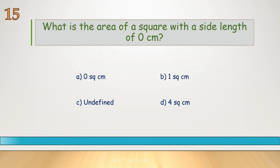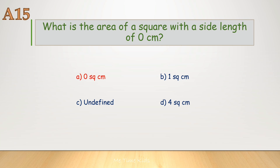What is the area of a square with a side length of 0 centimeters? Correct answer is A, 0 square centimeters.